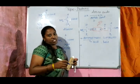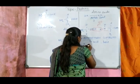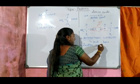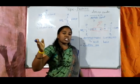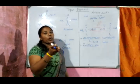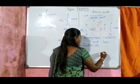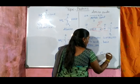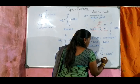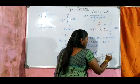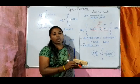Amino acids also exhibit zwitterionic nature. A zwitterion is a molecule that has both a positively charged group and a negatively charged group on the same molecule. For example, the zwitterionic structure of an amino acid shows COO⁻ (negatively charged) and NH3⁺ (positively charged) on the same molecule.